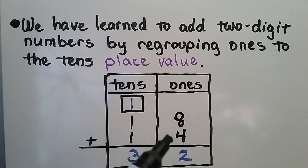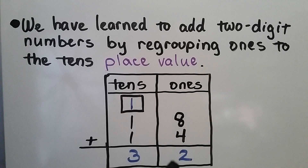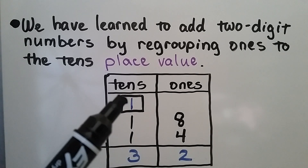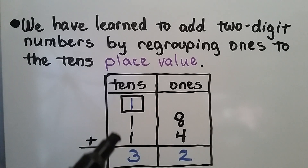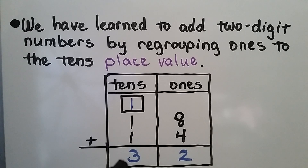We have 8 plus 4, which is equal to 12. A 12 is one ten and two ones. We regroup the ten up here. We add the tens column and we get 32. So 18 plus 14 is equal to 32.